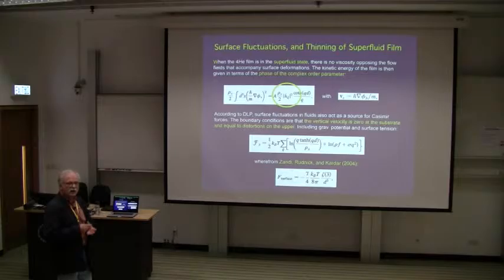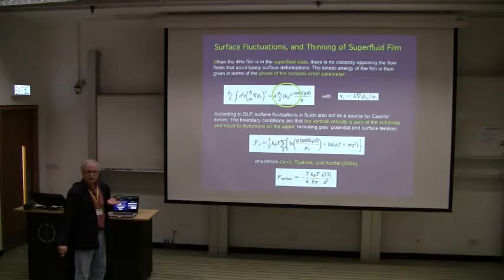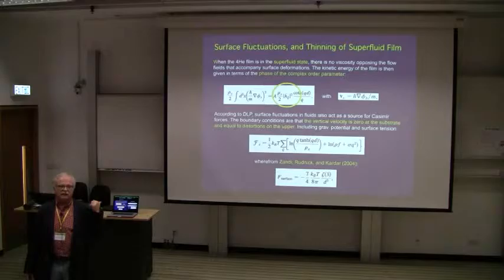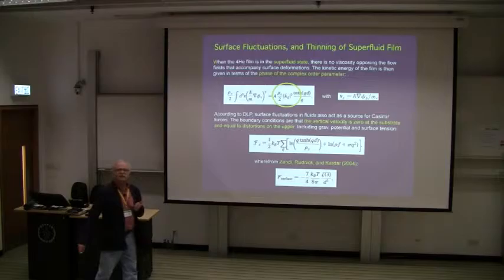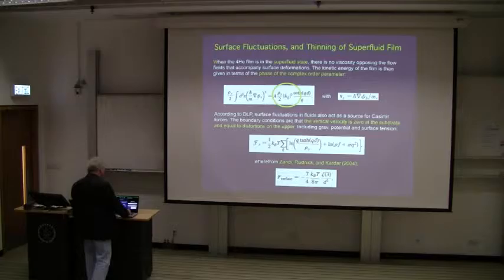A little bit about fluids first. This is the calculation on superfluid helium-4 in a layer. You allow the lower surface to be fixed and the upper one to fluctuate. This is the kinetic energy of the superfluid — there's no viscosity, so it's easy. The complex order parameter enters the velocity, which satisfies the Laplace equation. You solve it for the boundary condition, integrate over all possible capillary fluctuations of the surface, and this is the formula you come up with. There is a long-range van der Waals-like interaction, but this is an ideal fluid with no viscosity.